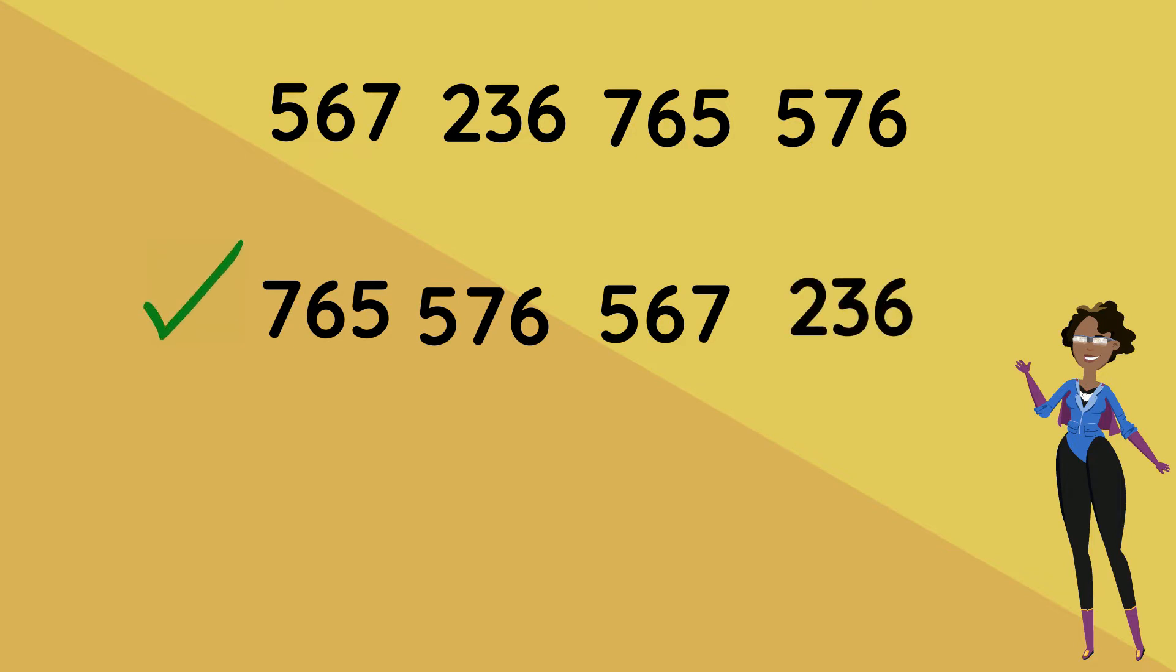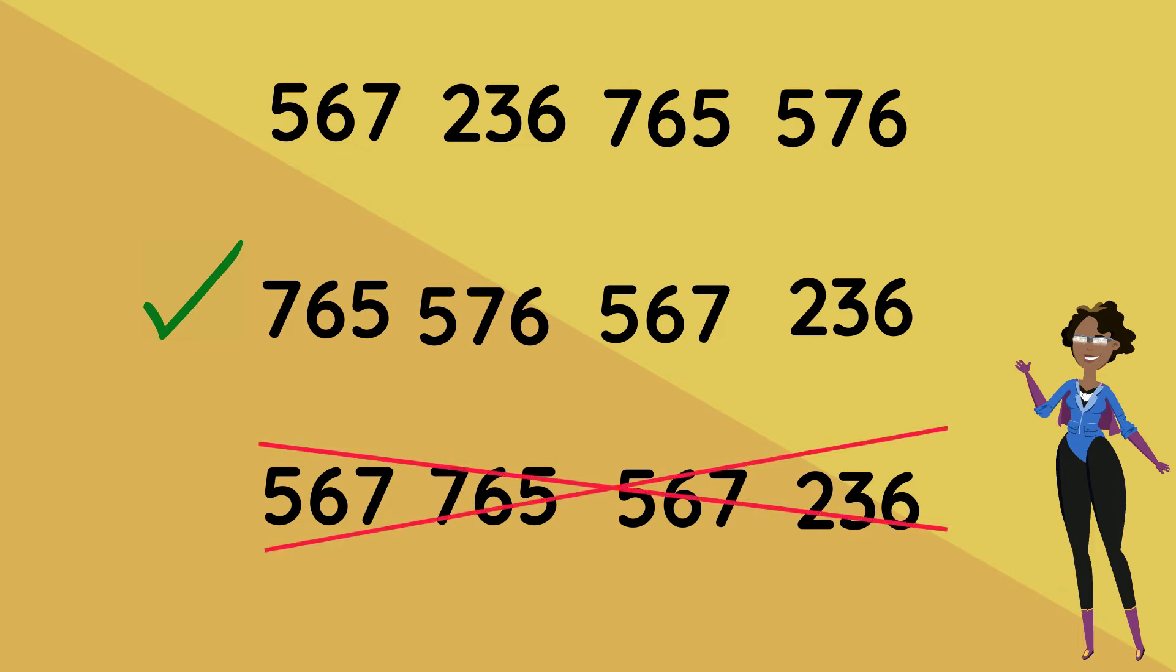You did it! If we did it like this, 576, 765, 567, and 236, it would be incorrect because 576 and 765 are not in the correct places based on the correct sequence of their values.